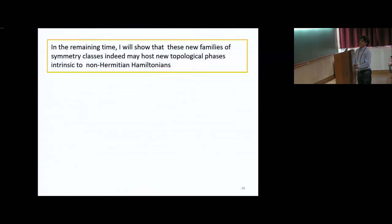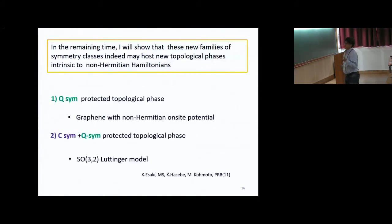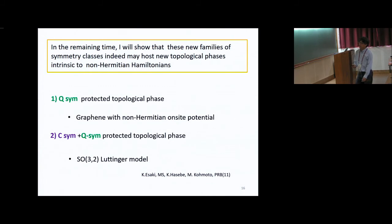In the remaining time, I will show that this new family of symmetry classes may indeed host new topological phases intrinsic to non-Hermitian systems. We consider two different new topological phases. First, I consider Q-symmetry protected topological phases using graphene with non-Hermitian on-site potentials as the model. Second, I consider C-plus-Q-symmetry protected topological phases, using the so-called SSH-like lattice model. All 43 symmetry classes are for non-interacting, non-Hermitian Hamiltonians — we only consider matrix Hamiltonians with no interactions.